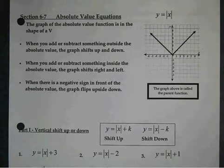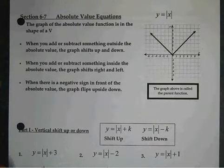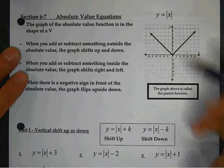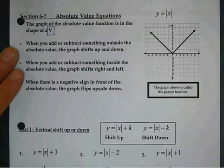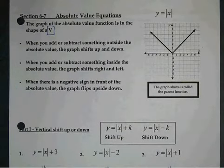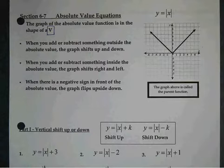Alright, so as we look at 6.7, absolute value equations. Remember an absolute value, the graph is in the shape of a V. We've talked about that before. Anytime you have an absolute value equation, the graph is in the shape of a V.